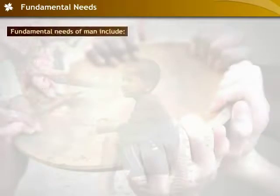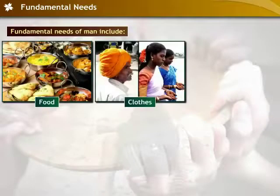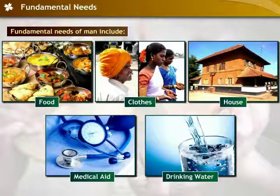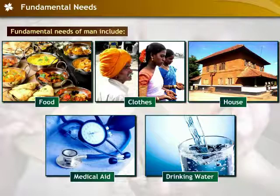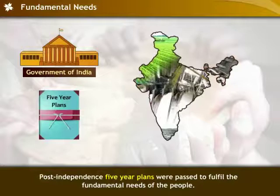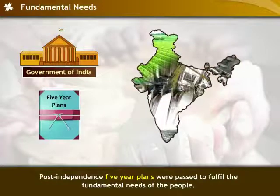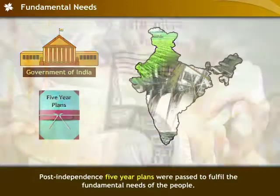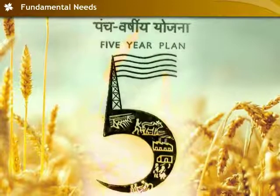The fundamental needs of man include food, clothes, house, medical aid and pure drinking water. Every civilized society aims at fulfilling these needs of the people. Post-independence, developmental programs were initiated to fulfill the fundamental needs of people. The five-year plans were one of them.